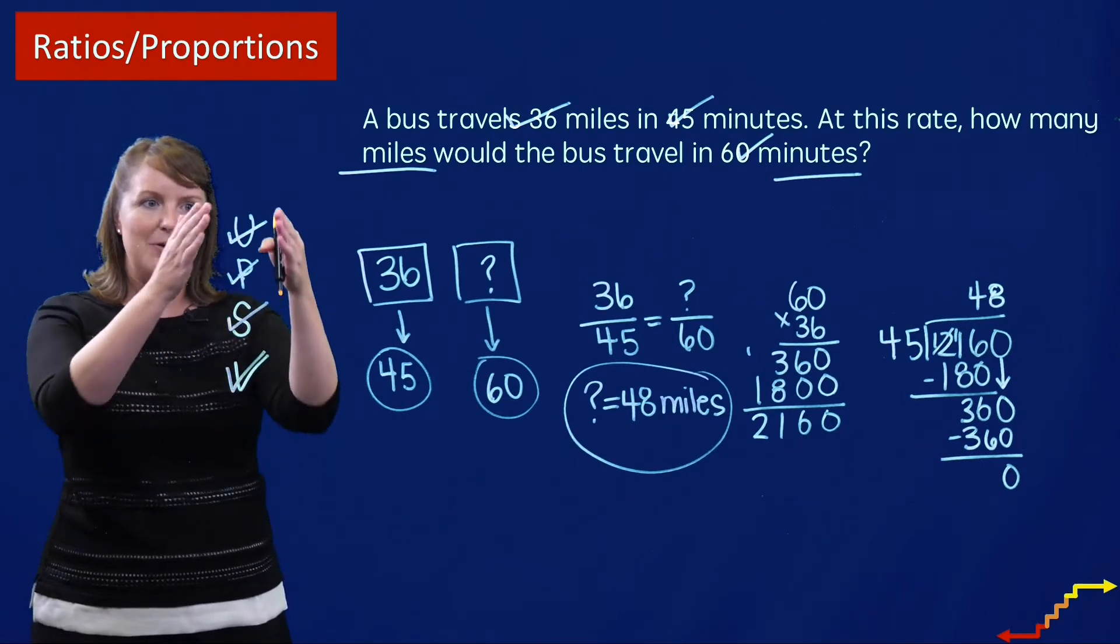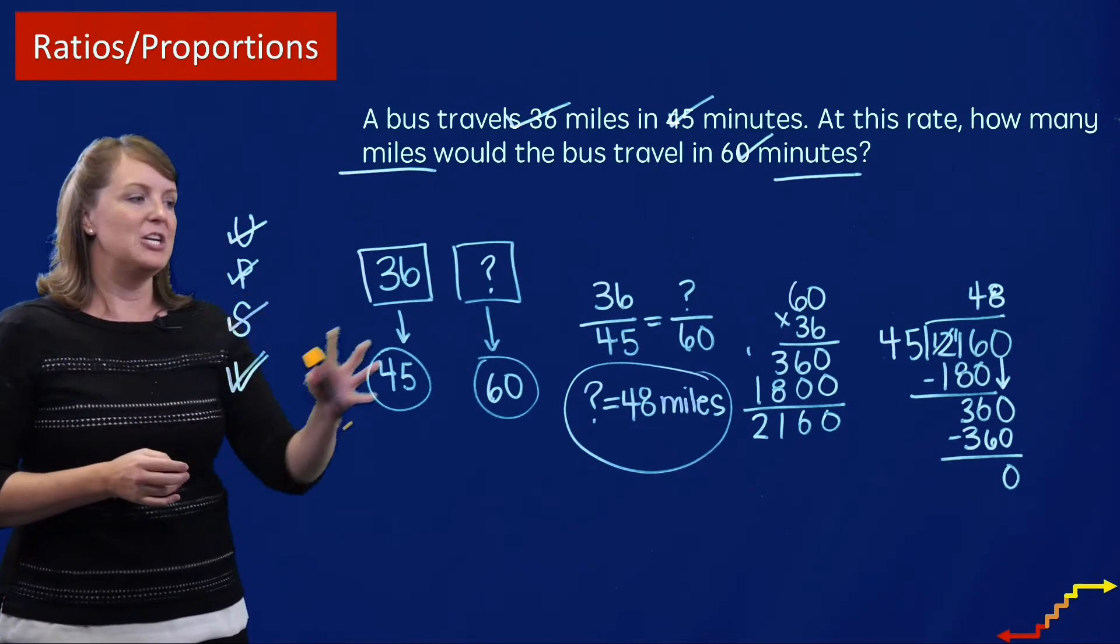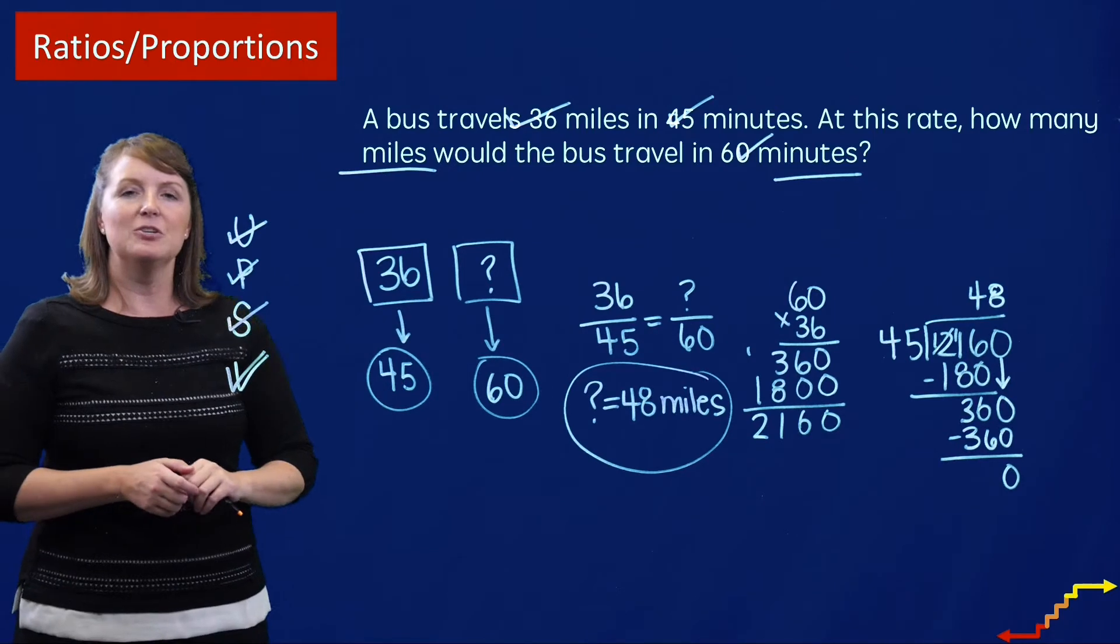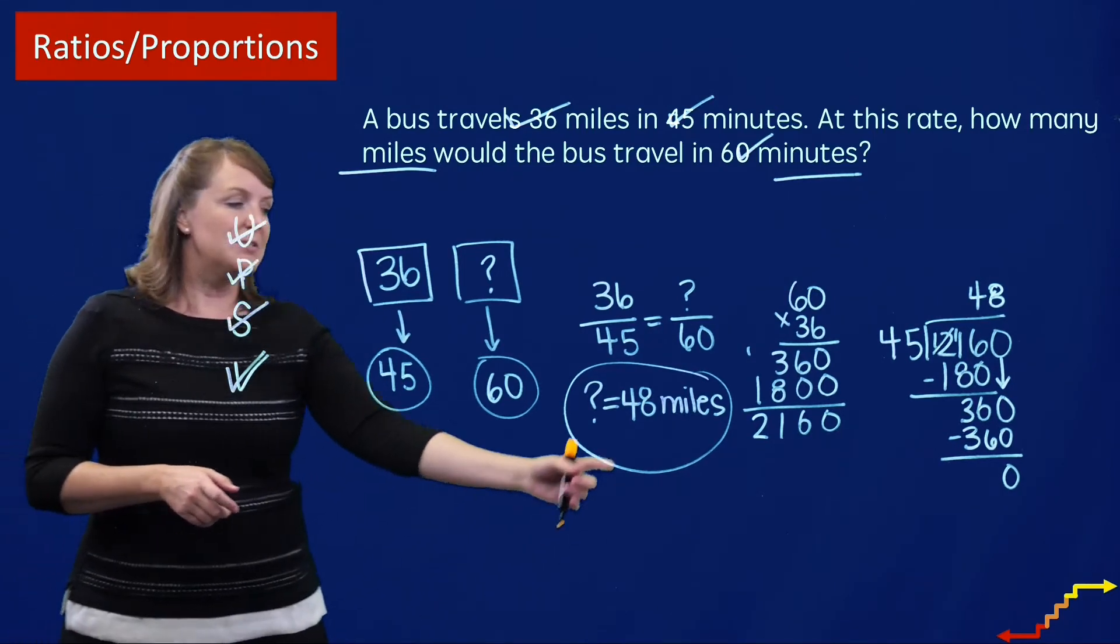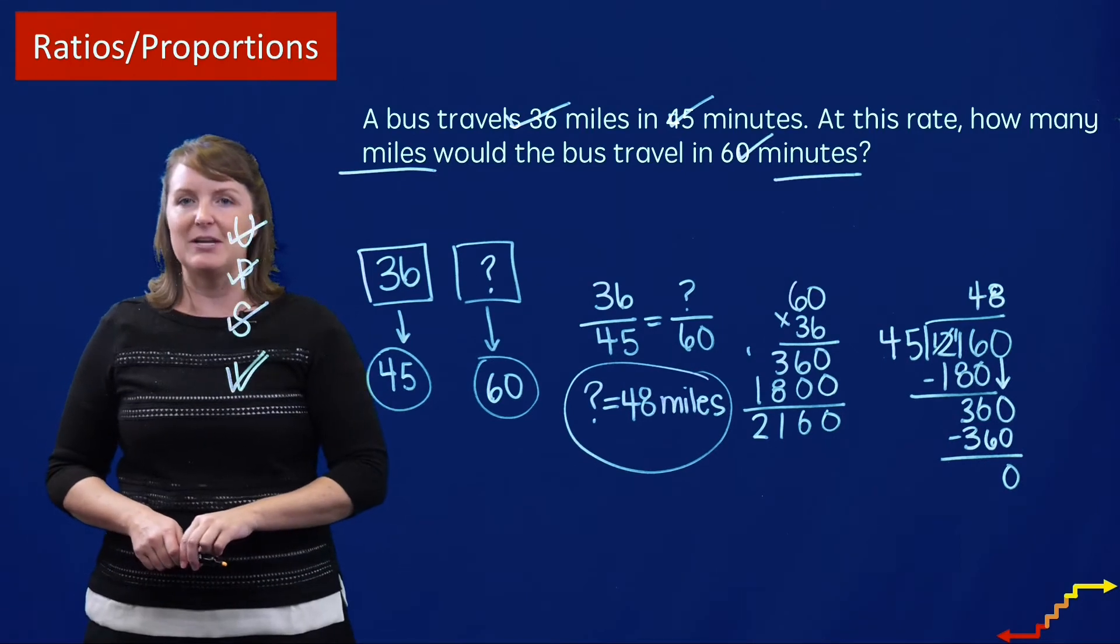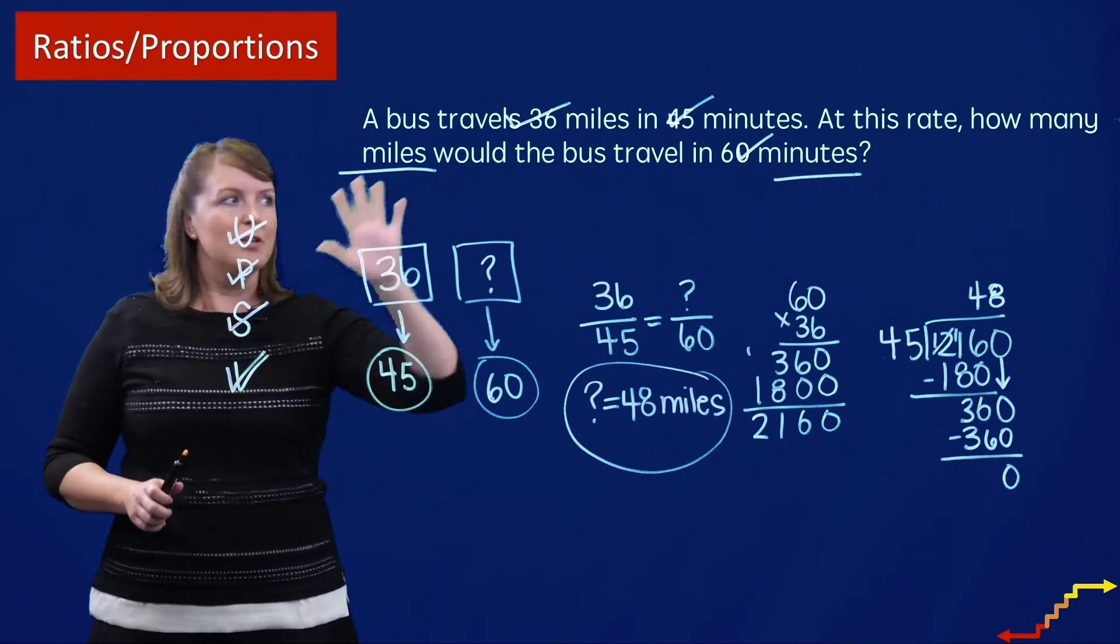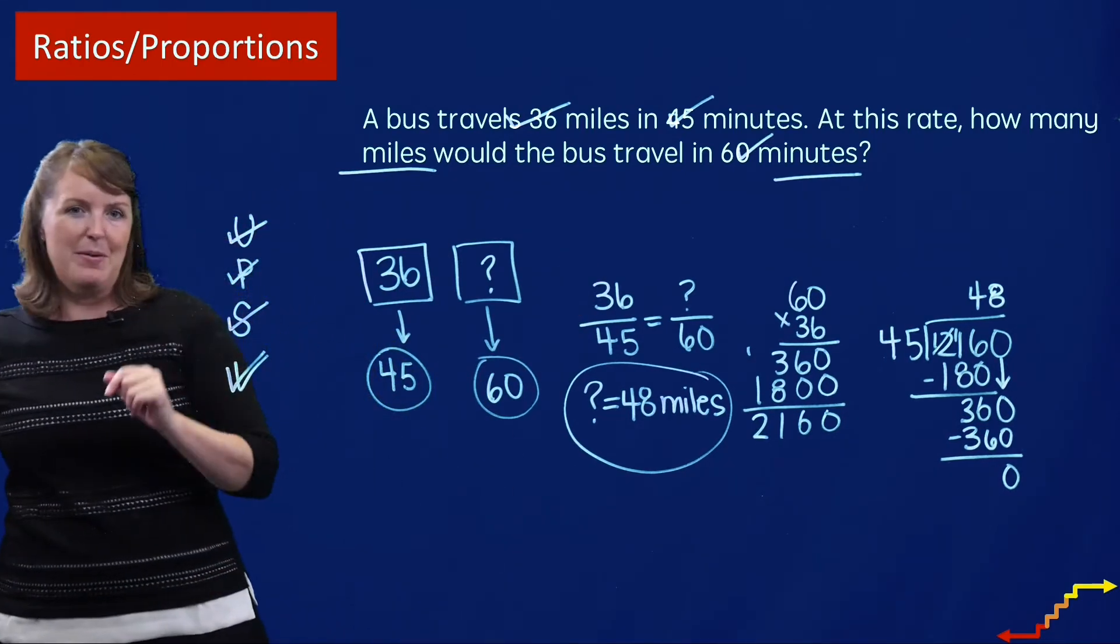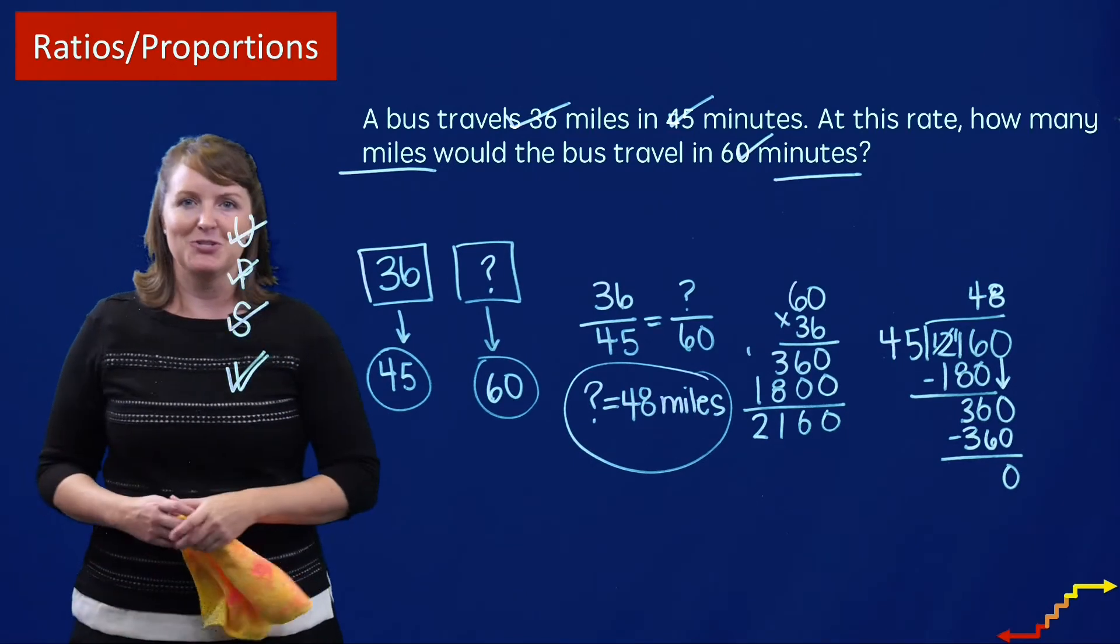So with this ratios and proportions problem, we combined our attack strategy and focused in on the ratios and proportions schema to help us figure out that the bus could travel 48 miles in 60 minutes. Now I'm going to erase all of this artistry, and I'll be right back to solve one more ratios and proportions problem.